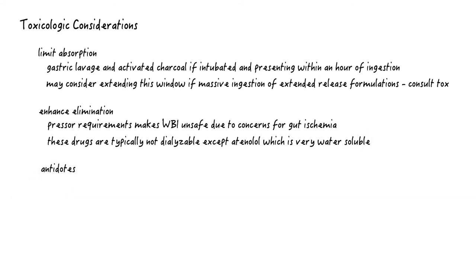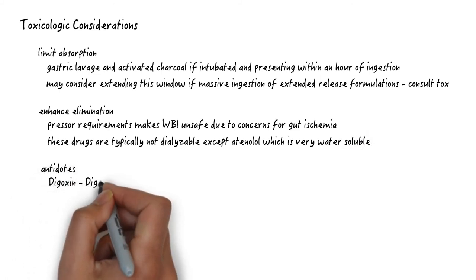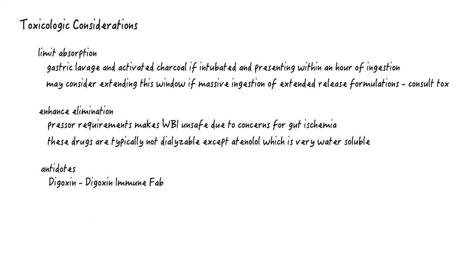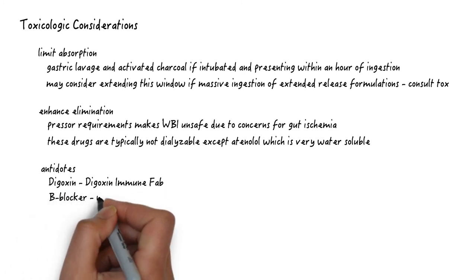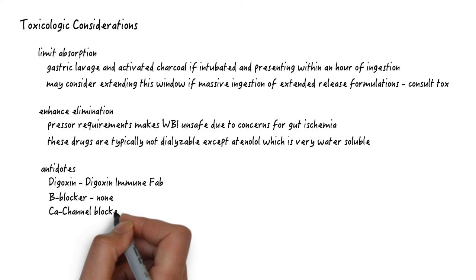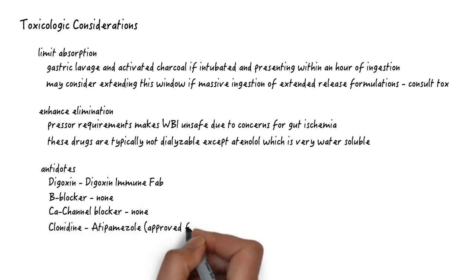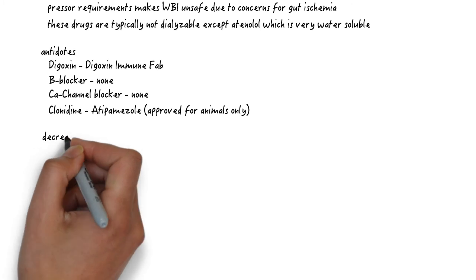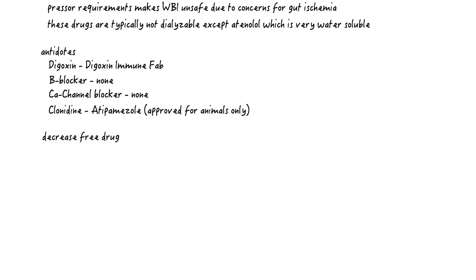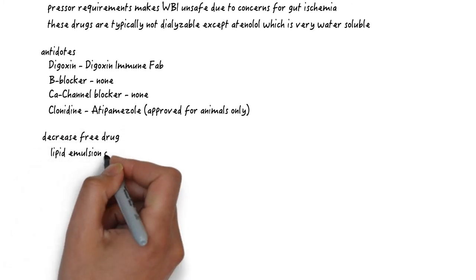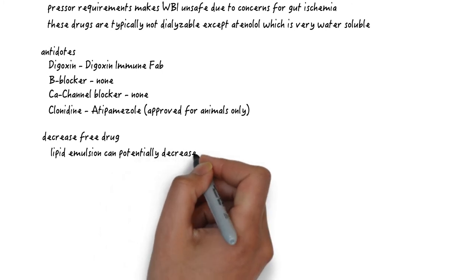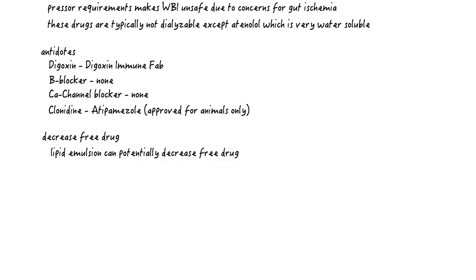The third step is to consider antidotes. Digoxin, obviously, has the antidote of digoxin immune fab. Beta blocker and calcium channel blockers really have no antidotes. Clonidine has a theoretical antidote of atipamezole, but this is approved for animal use only. The fourth strategy is to try and decrease free drug, and lipid emulsion therapy can accomplish this for you, but remember it really messes with your photometric testing, so use it as a last resort.